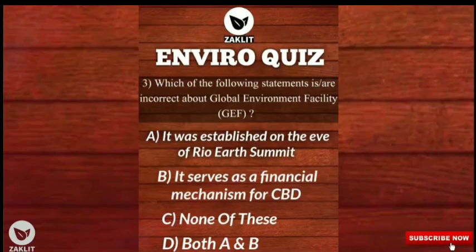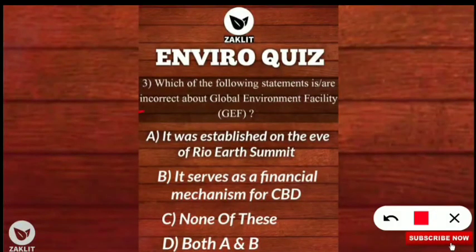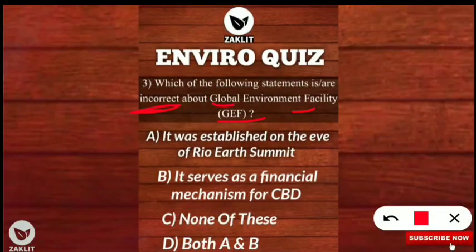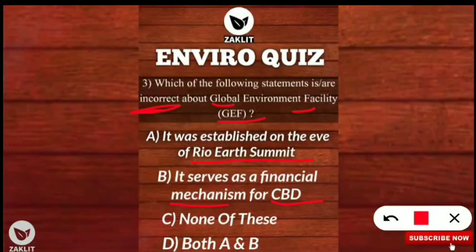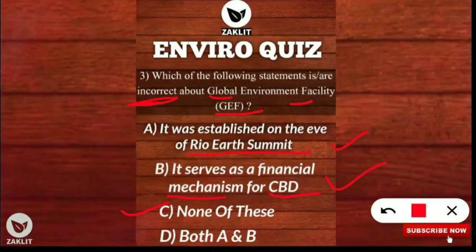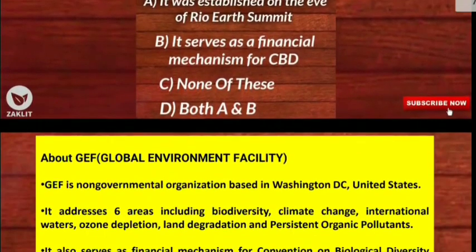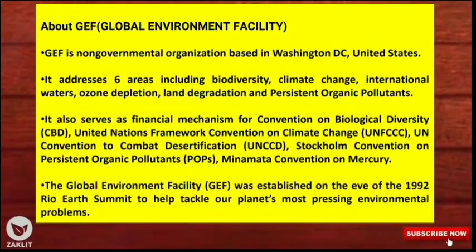Question three: which of the following statements is or are incorrect about the Global Environment Facility (GEF)? Be attentive — the question asks for the incorrect statement. The options were: it was established on the eve of the Rio Summit in 1992, and it serves as a financial mechanism for the CBD. None of these are incorrect because both statements are correct regarding the GEF, so 'none of these' is the correct answer.